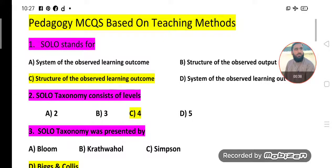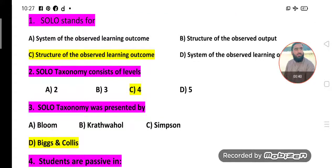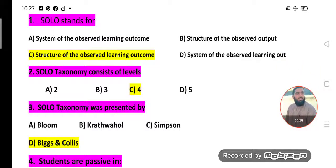MCQs number first. S.O.L.O. stands for: System of the Observed Learning Outcome, Structure of the Observed Output. Option C is the correct option - Structure of the Observed Learning Outcome. S means structure, O means observed, L means learning, and O means outcome. So S.O.L.O. means Structure of the Observed Learning Outcome.